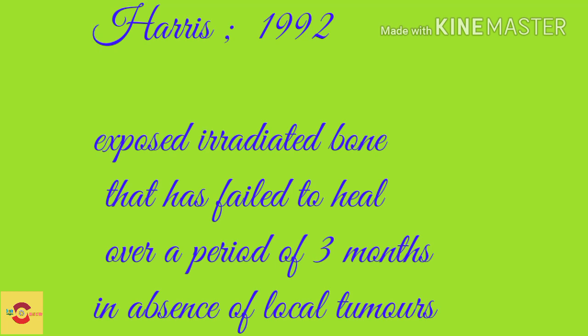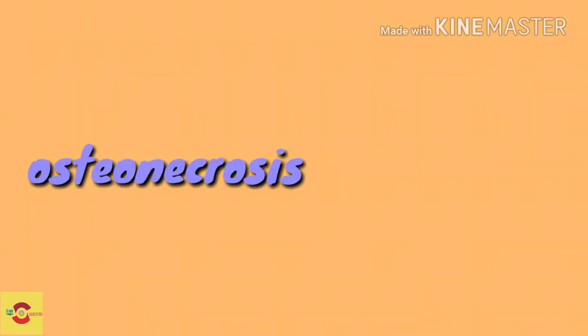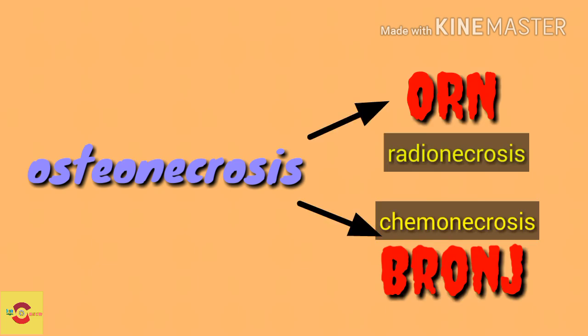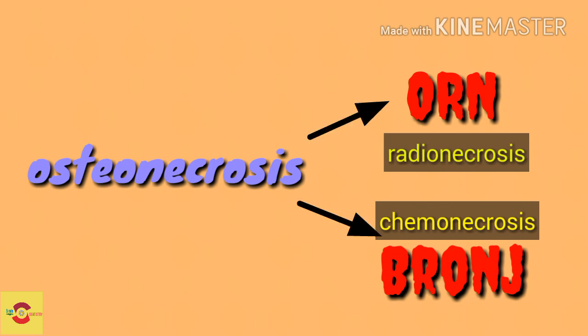It may be chronic or progressive. Generally, osteonecrosis can be due to radiation, in which case it is called osteoradionecrosis, or due to bisphosphonate-related osteonecrosis, which can be called osteochemonecrosis. The risk factors of ORN, that is osteoradionecrosis, include the following.